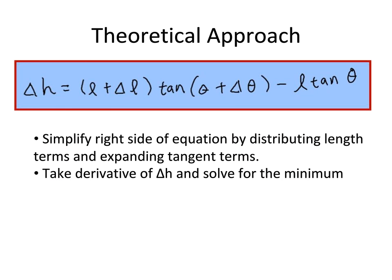One of the approaches that we can take is a theoretical approach, where we first simplify the right side of the equation, distributing our l plus delta l into the tan of theta plus delta theta, and simplifying the equation as much as we can. Then we would have to take the derivative of delta h, which would allow us to solve for a minimum. But this requires calculus, and in addition, the simplification process gets very complex very fast. So this, I feel, is not a good way to show how we can minimize the error.